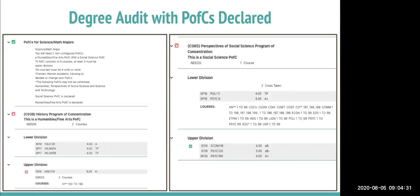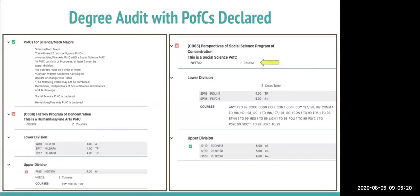Looking at a degree audit with PFCs declared: this student is a natural sciences major, so they need PFCs in humanities and fine arts and social sciences — both are declared, with the checkbox showing green. They have a History program of concentration with three lower division requirements completed, one upper division course in progress, and two more upper division courses still needed. For their Perspectives of Social Science PFC, they only need one more course — an additional lower division course — while their upper division requirements are complete.